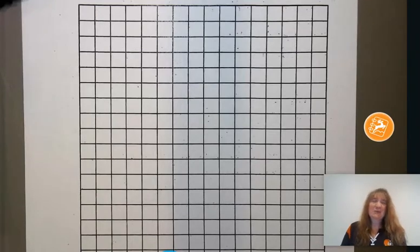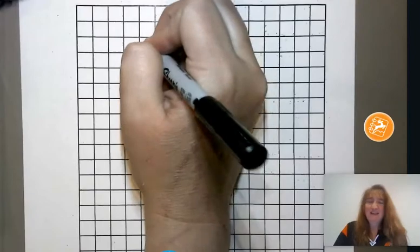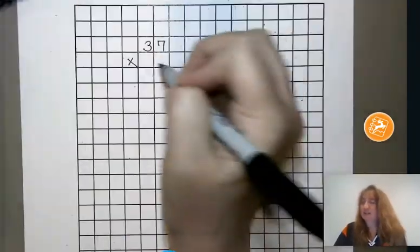So today what we're going to do is start off multiplying a two-digit number by a two-digit number. So let's go ahead and jump in and experiment with 37, and we're going to multiply that by 25.